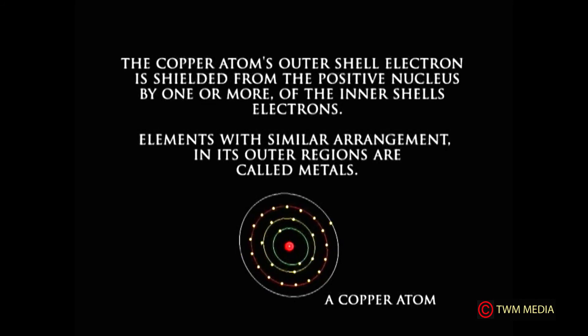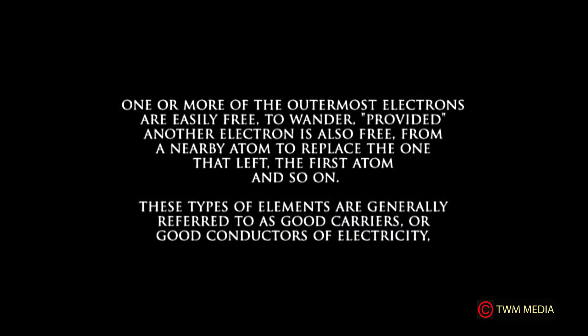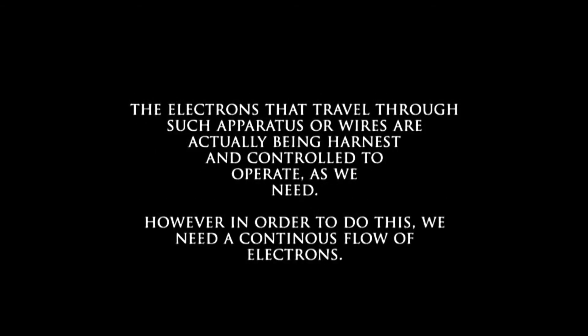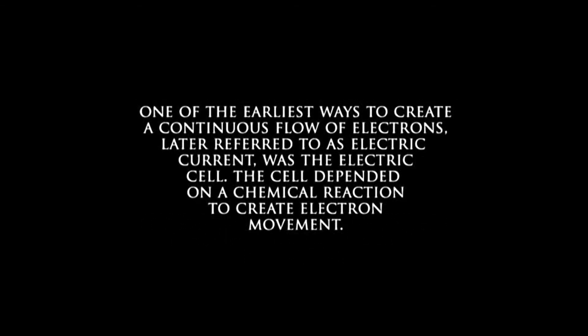Elements with similar arrangements in their outer regions are called metals. One or more of the outermost electrons are easily free to wander, provided another electron is also free from a nearby atom to replace one that left the first atom, and so on. These types of elements are generally referred to as good carriers or good conductors of electricity. The electrons that travel through such apparatus or wires are harnessed and controlled to operate as needed. In order to do this, we need a continuous flow of electrons. One of the earliest ways to create a continuous flow of electrons, later referred to as electric current, was an electric cell. The cell depended on a chemical reaction to create electron movement.